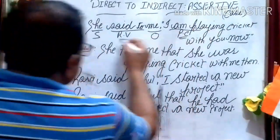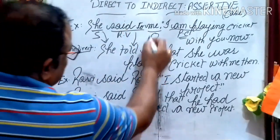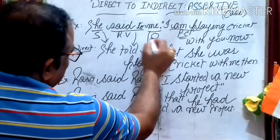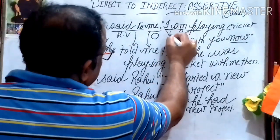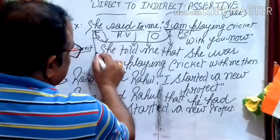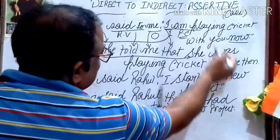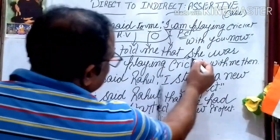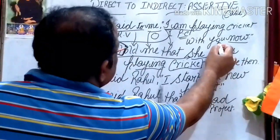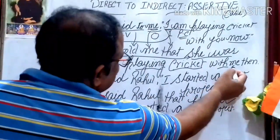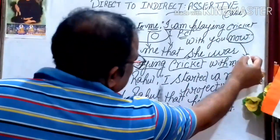'She' comes as it is. 'Said to' changes into 'told me'. In place of inverted commas, we use 'that'. 'I' is first person and changes according to the subject — since 'she' is a girl, 'I' becomes 'she'. 'Am playing' (present continuous) changes into 'was playing' (past continuous). 'You' is second person and changes according to the object, so it becomes 'me'. 'Now' is a time-related word and changes into 'then'.